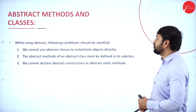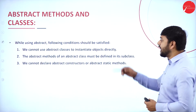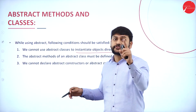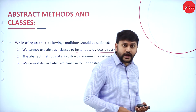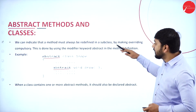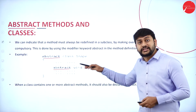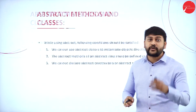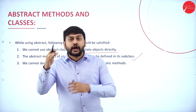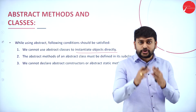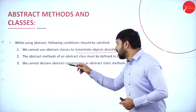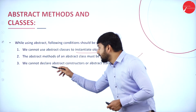Here are some important points about abstract classes and methods. First: we cannot use an abstract class to instantiate an object directly. Second: when you create a subclass of an abstract class, you must implement and define what that class and method should do — that implementation must happen in the subclass.